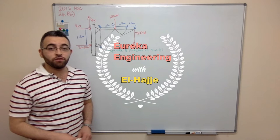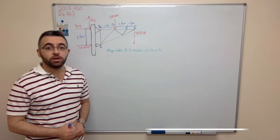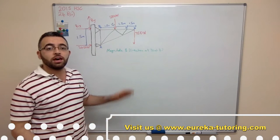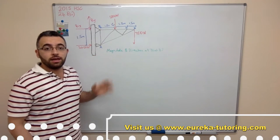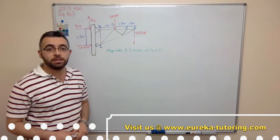Welcome to the next edition of Eureka Engineering HC Solutions. In the last video we looked at question 24b part 1 from the 2015 HC paper where we calculated the reaction force at the roller joint A. Now we are required to find the magnitude and direction of the reaction force at pin joint B.